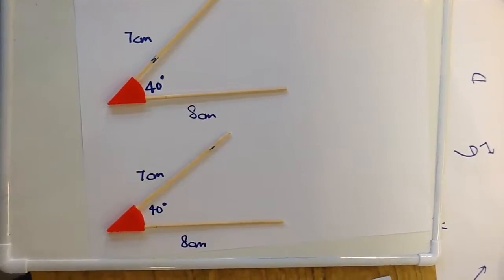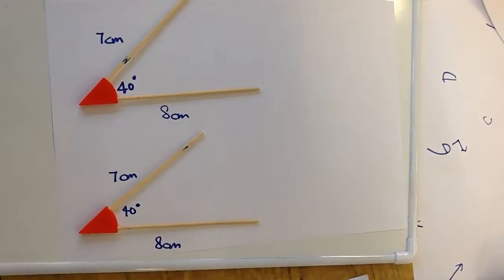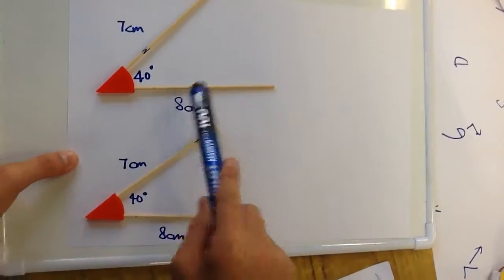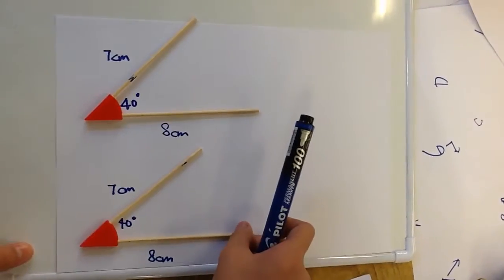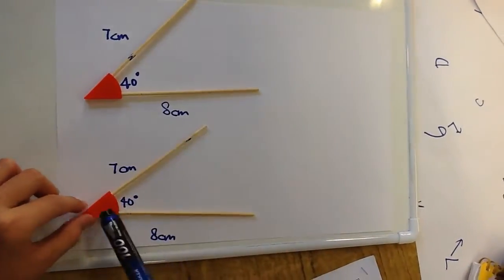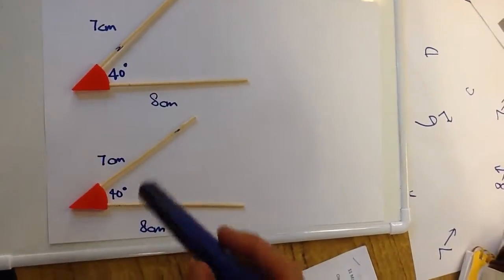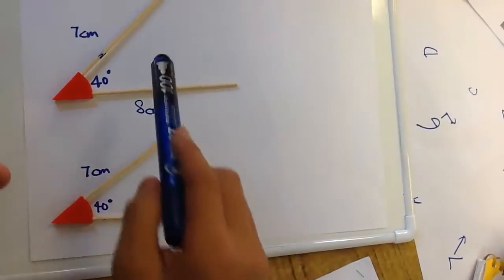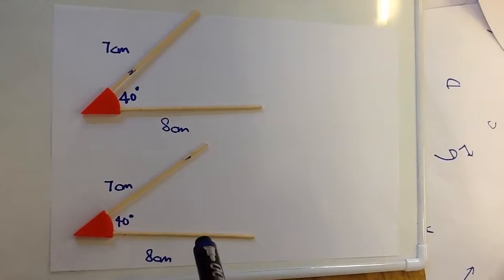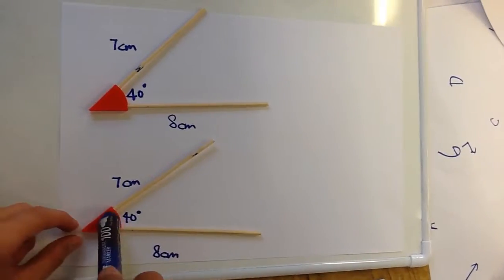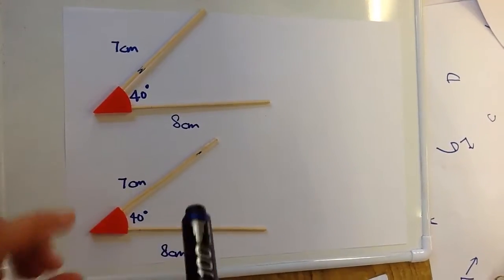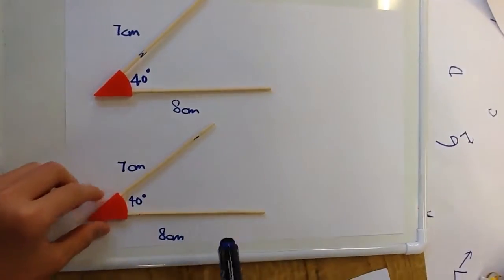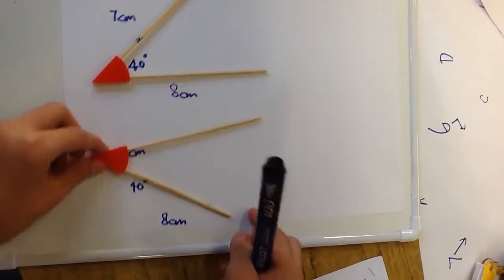Today we are going to talk about side angle side. For two triangles, one side length is the same, and these two other side lengths are the same too. And the angle's degree should be the same too.